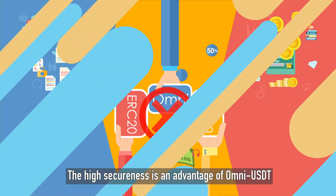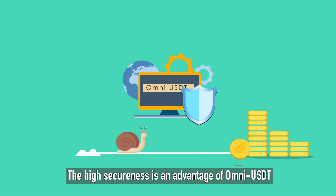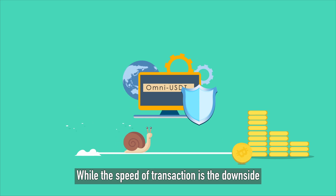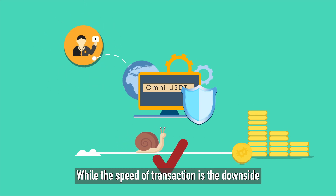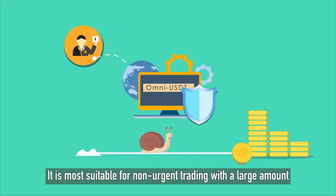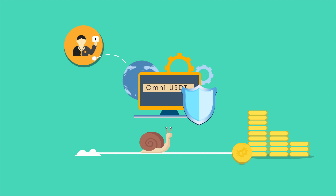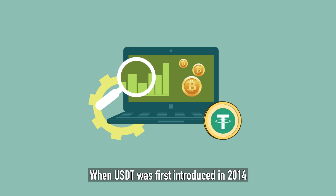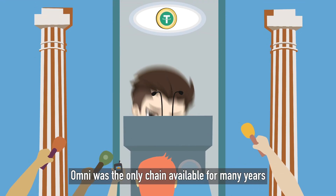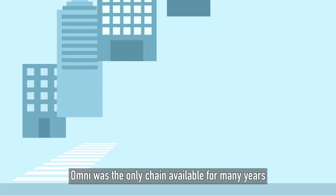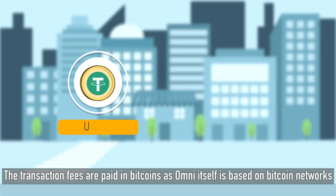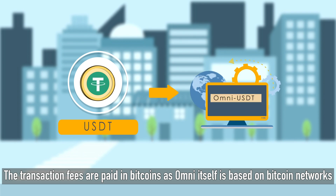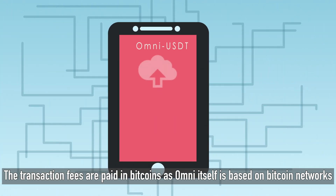High security is an advantage of Omni USDT, while the speed of transaction is the downside — it is most suitable for non-urgent trading with a large amount. When USDT was first introduced in 2014, Omni was the only chain available for many years. The transaction fees are paid in Bitcoin, as Omni itself is based on Bitcoin networks.